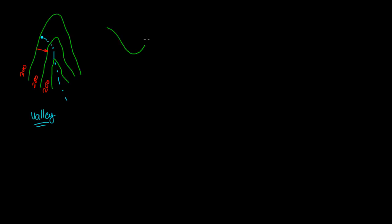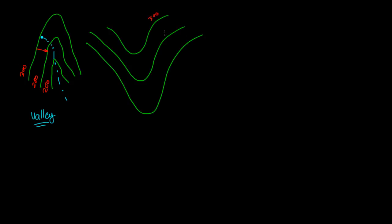Let's say you had this shape, and this was at an elevation of 300, this was at 290, and this was at 280. Is this a ridge or a valley? Let's use the water droplet method. The water droplet always goes down from the higher elevation line to the lowest. So it's closest to 300, then 290, then 280 — there's a slope going down outward. Water droplets placed at different positions all flow outward, which means 300 is the largest elevation and the lines decrease outward. Therefore, this is a ridge.